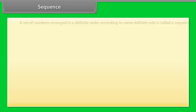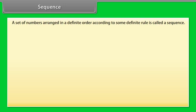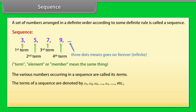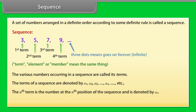A set of numbers arranged in a definite order according to some definite rule is called a sequence. The various numbers occurring in a sequence are called its terms. The terms of a sequence are denoted by a1, a2, a3, till an, etc. The nth term is the number at the nth position of the sequence, and is also called the general term.